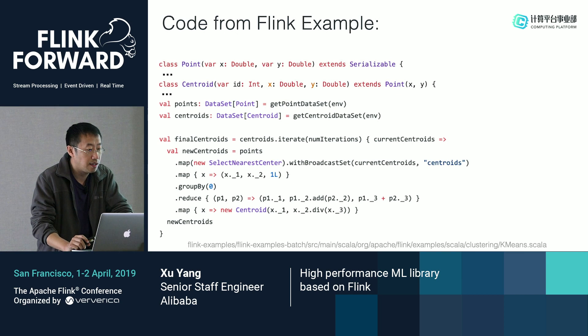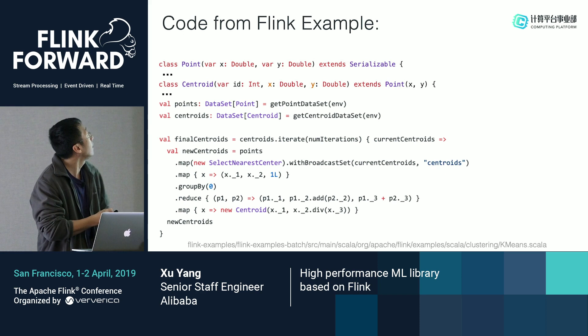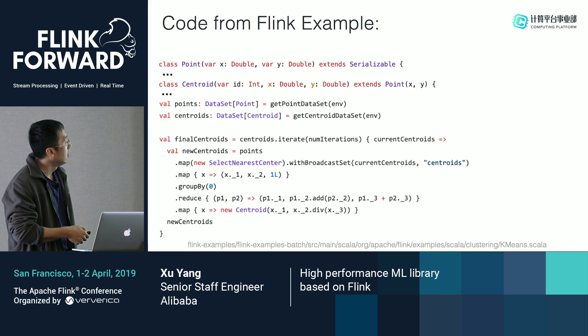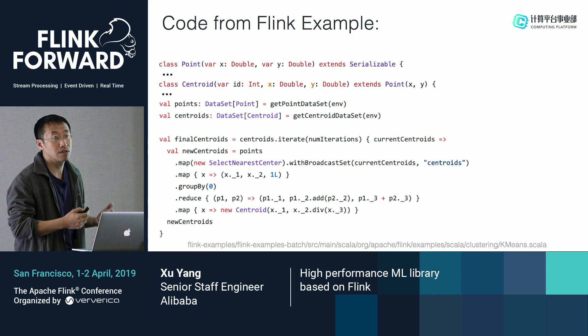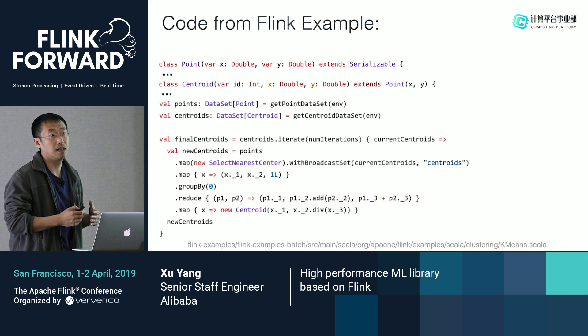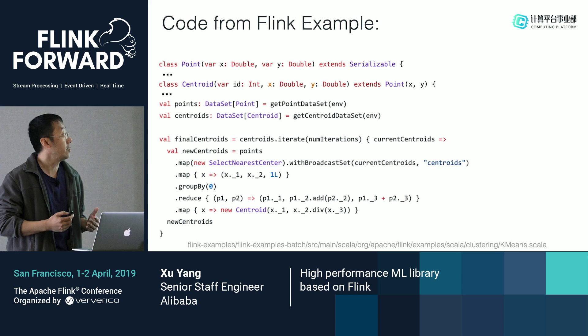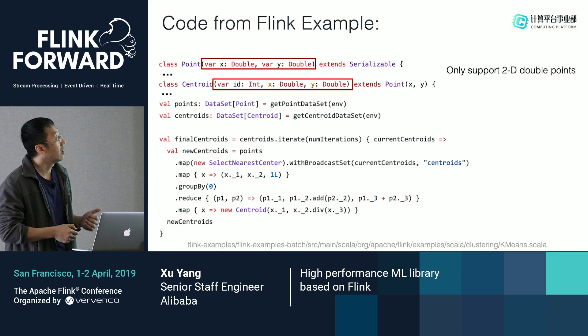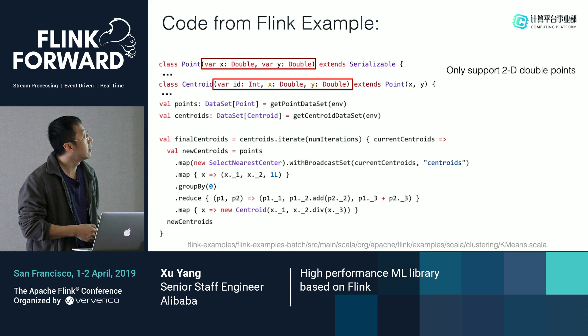There's an implementation in the Flink example. It has defined a third type — Point and also a Centroid. This side point is the training side. This demo shows how to use iteration and also introduces what the k-means algorithm is. But for a demo it's good enough; for real practice it has some limitations. For example, there is a specially defined input data type that only supports two-dimension double data.